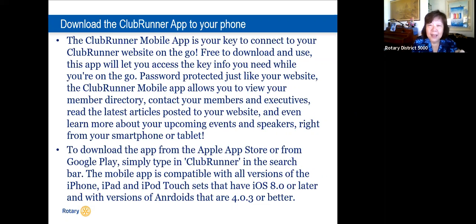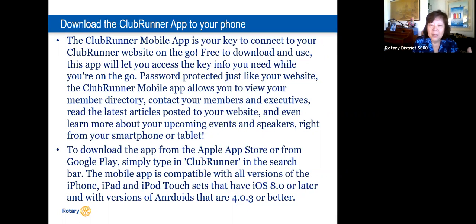I encourage you to go through the websites and click all the different links to find out what's there. The best feature of ClubRunner, if your club uses it, is the mobile app. Go to the app store, download the ClubRunner app, and on your phone you'll have access to your club information, club website, and club members — so if you need someone's phone number or email address, you have it right on your phone.